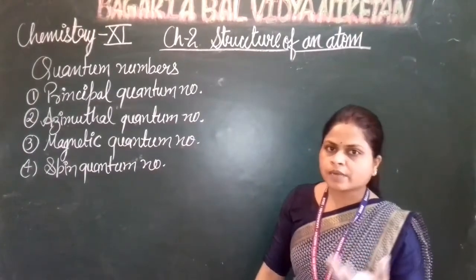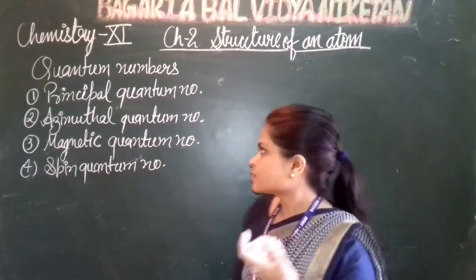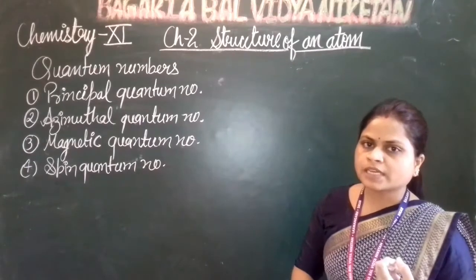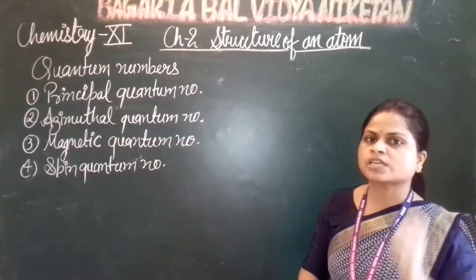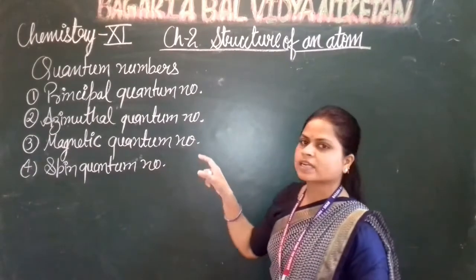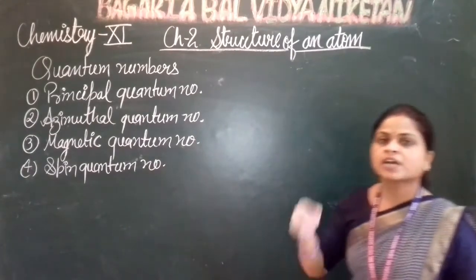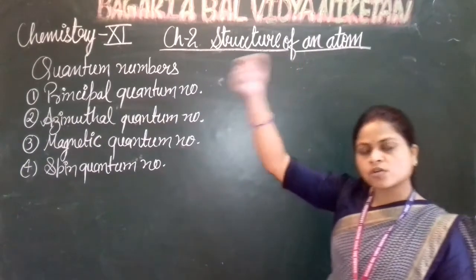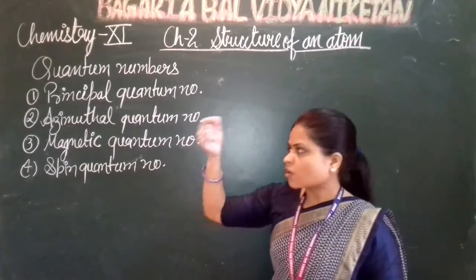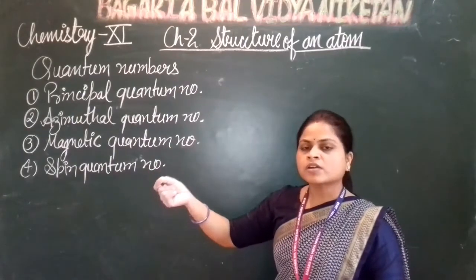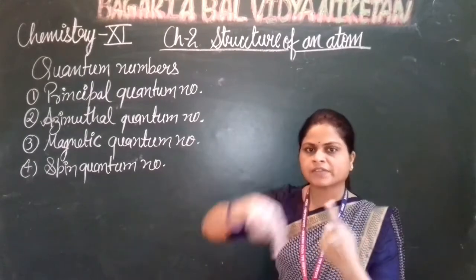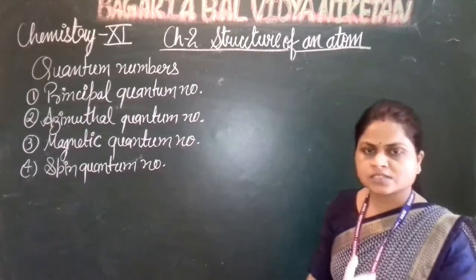These quantum numbers tell us about the position of an electron — which shell it belongs to, which sub-shell it is in, and which orbital it occupies.